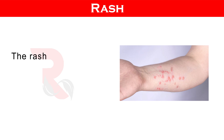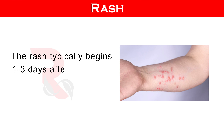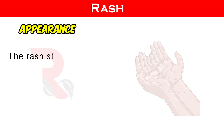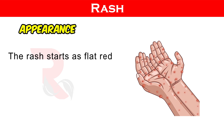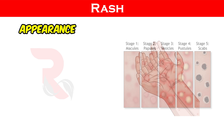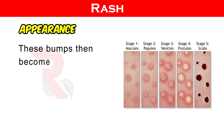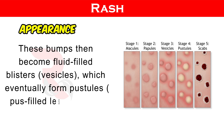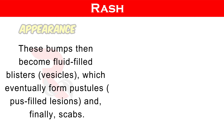Rash: The rash typically begins 1 to 3 days after the onset of fever. Appearance: The rash starts as flat red spots that evolve into raised bumps. These bumps then become fluid-filled blisters, called vesicles, which eventually form pustules — pus-filled lesions — and, finally, scabs.